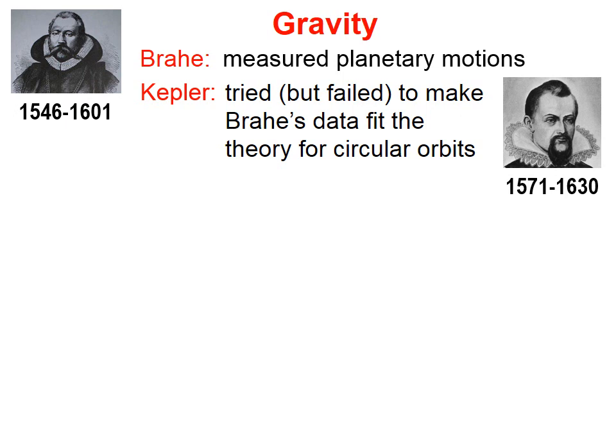Circles being perfect shapes, it was thought that the planets traveled in perfect circles. And despite Kepler's efforts, he couldn't make Brahe's data fit that theory. And Brahe's data was very good, very precise.